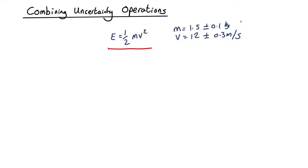Let's imagine we've got a bowling ball of mass 1.5 kilograms travelling at 12 meters per second and there's an uncertainty in both those values. Now from that we can work out our best estimate of the energy, which is just a half times 1.5 times 12 squared, which comes out as 108.